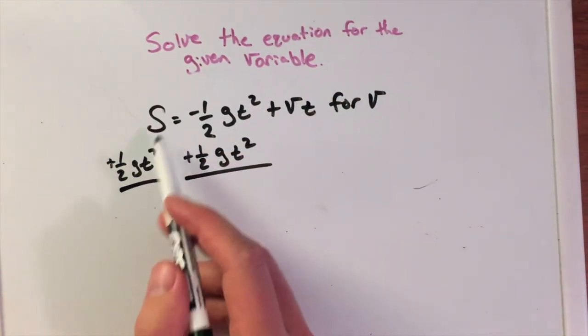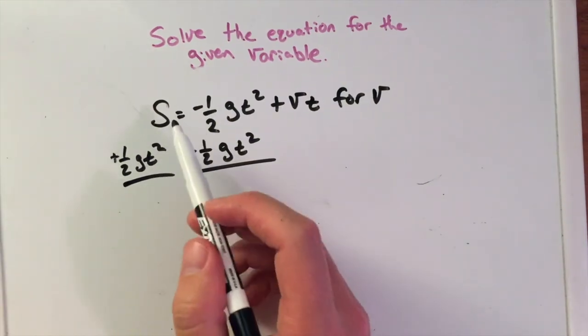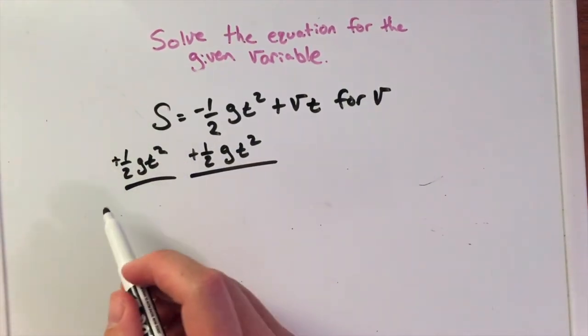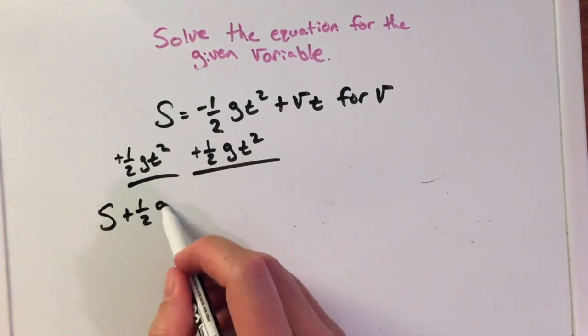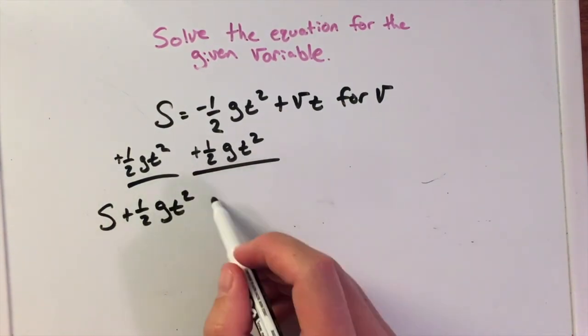These are not like terms here. So we have s by itself plus one-half g t squared equals...